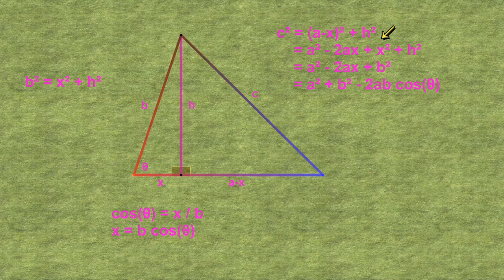When we expand the bracket term, we get a squared minus 2ax plus x squared. We can use our one piece of information to replace x squared plus h squared with b squared. Now there's only one x left and we replace it with the second piece of information to get c squared equals a squared plus b squared minus 2ab cosine theta, which is the cosine rule.